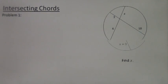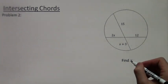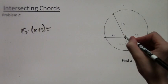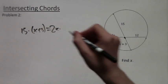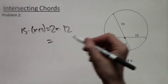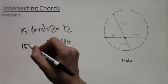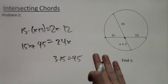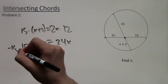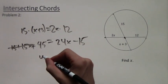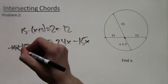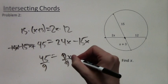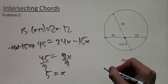Now let's do another example. Once again, we want to find X. We have 15 on one side and X plus 3 on the other, so we multiply them: 15 times (X plus 3) equals 2X times 12. That gives us 15X plus 45 equals 24X. Subtracting 15X from both sides, we get 45 equals 9X, and dividing by 9, X equals 5.